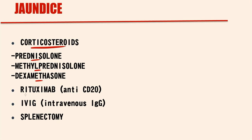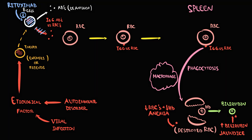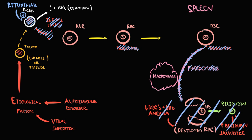The next option is rituximab. Rituximab is an anti-CD20 antibody, and CD20 receptors are present specifically on B cells. With injection of rituximab, it targets B cells and upon binding induces their apoptosis. With decreasing amounts of B cells, the production of immunoglobulin G against red blood cells decreases. Thereby, phagocytosis by macrophages decreases, red blood cell destruction decreases, and the amount of red blood cells in the blood increases.